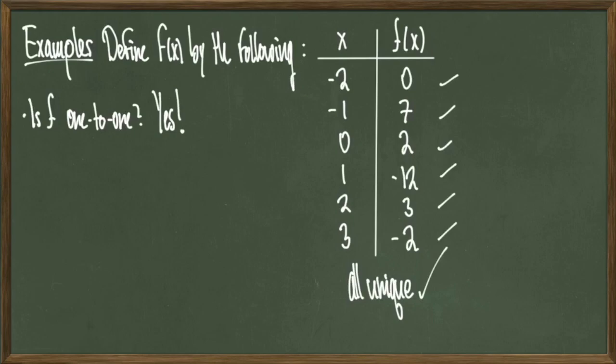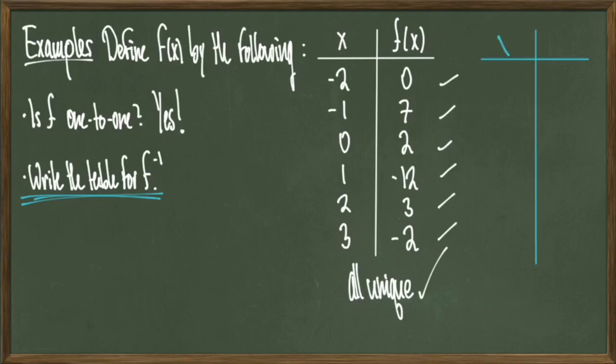The way to do that is pretty simple. We're basically going to flip the xy chart. To build this, I'm going to label the table with x and f inverse of x. And then I'm going to take the outputs of f of x and make those my inputs for f inverse of x. Copy the information like so, and we see that we have the xy chart for f inverse of x.